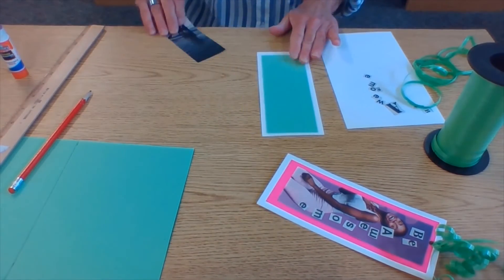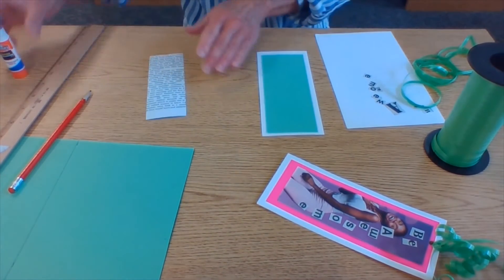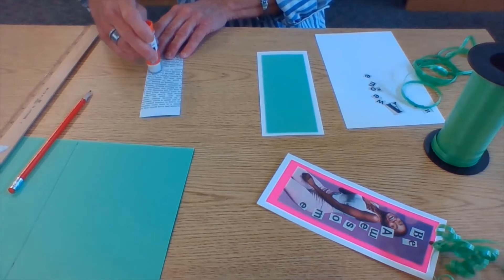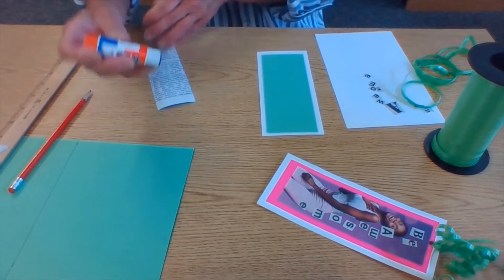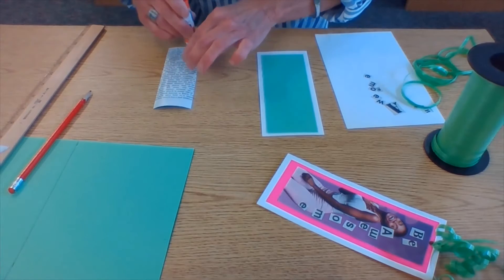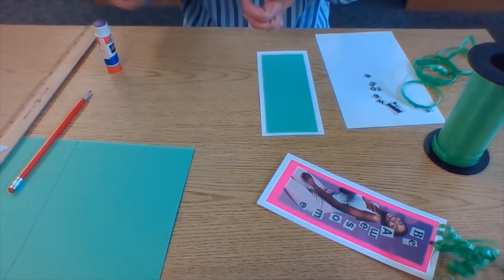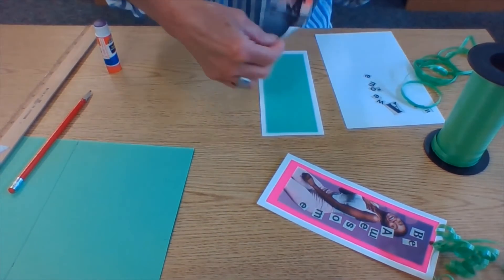So there's my first layer and then I'll take my image that I chose and do the same thing. Glue that down.